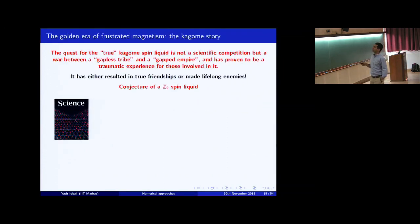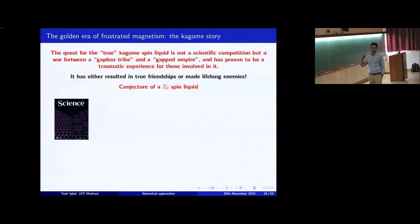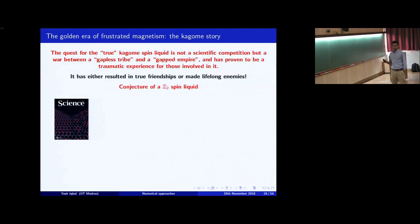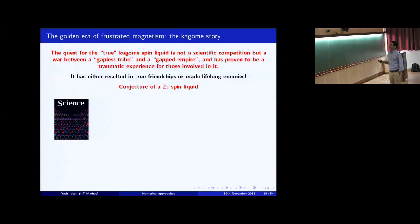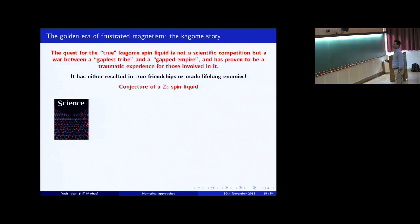The golden era of frustrated magnetism was the Kagome story. When I entered my PhD, it was at its most hotly debated stage. The quest for the true spin liquid was not a scientific competition — it was a full-on war between a gapless tribe and a gapped empire. At that time, the gapped empire was run by Steve White and others. It resulted in true friendships or lifelong enemies at that stage.